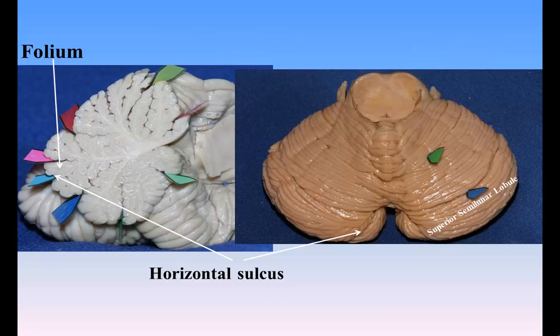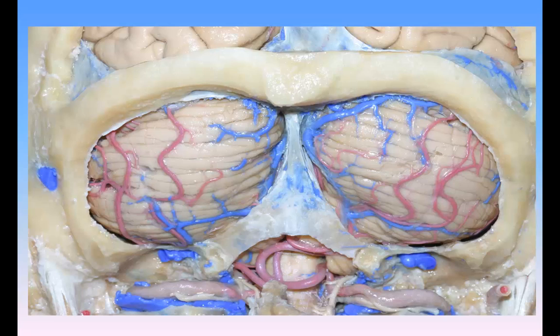The folium vermis and superior semilunar lobule. The folium vermis, folium cacuminis, cacuminal lobe, is a short, narrow, concealed band at the posterior extremity of the vermis, consisting apparently of a single folium, but in reality marked on its upper and under surfaces by secondary fissures. Laterally, it expands in either hemisphere into a considerable lobule, the superior semilunar lobule, lobulus semilunaris superior, posterior superior lobule, which occupies the posterior third of the upper surface of the hemispheres and is bounded below by the horizontal sulcus. The superior semilunar lobules and the folium vermis form the lobus semilunaris.